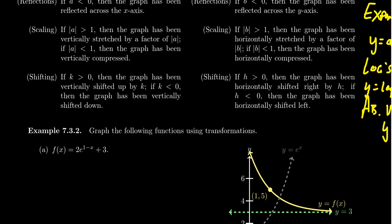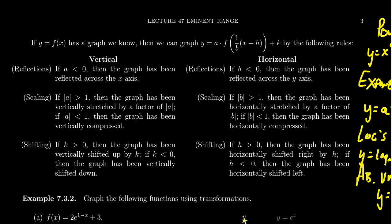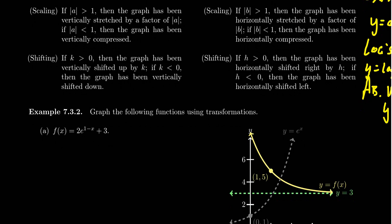Before getting to examples, an important point: a vertical transformation only affects the range, because vertical transformations change y-coordinates, and the range is the set of all y-coordinates on the graph. Vertical transformations can only change the range — they can never affect the domain. On the other hand, a horizontal transformation changes x-coordinates, and the domain is the set of all x-coordinates on the graph. Horizontal transformations can change the domain but cannot change the range.